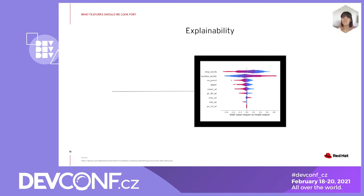Many of these features such as ensembling, drift detection, or explainability are not technically unique to model servers. In fact, there's an abundance of Python libraries that can do this locally. However, putting these algorithms into your machine learning workflow helps you to leverage all of those same capabilities of Kubernetes and containerization. You have your native repeatability and flexibility.